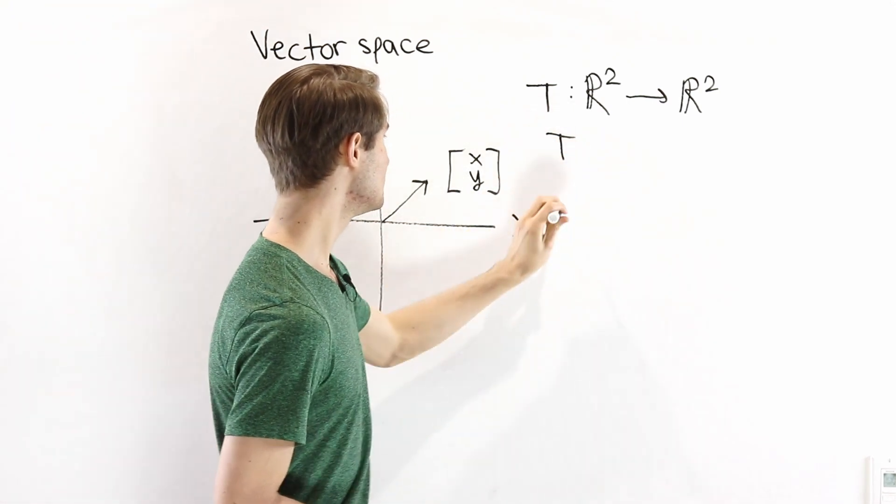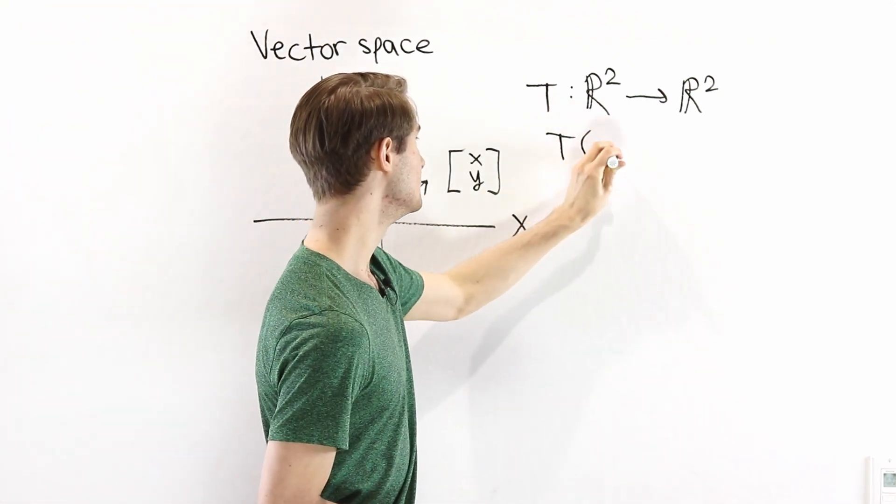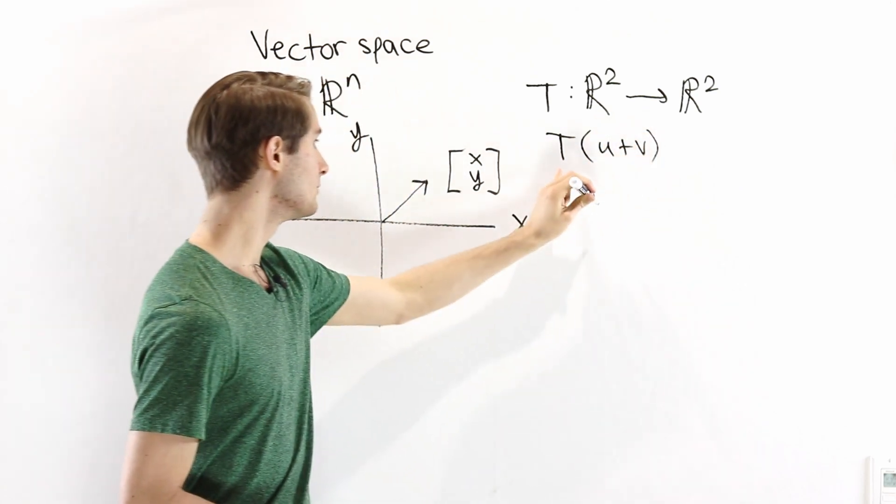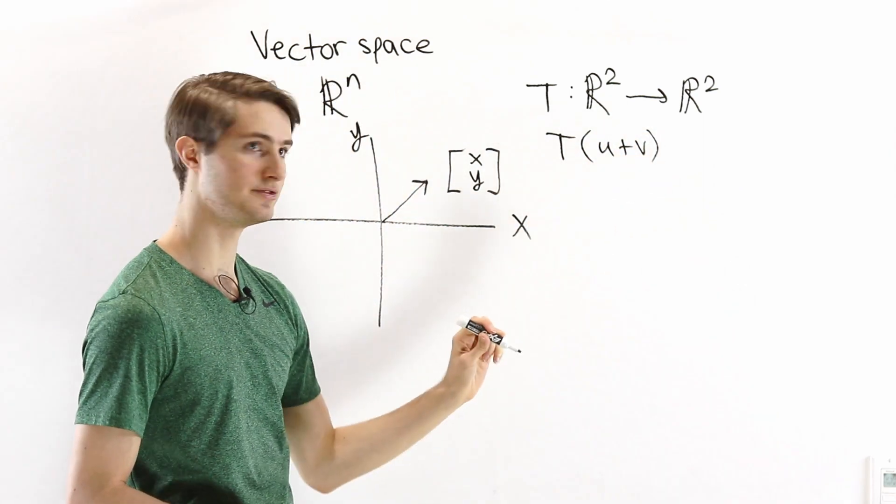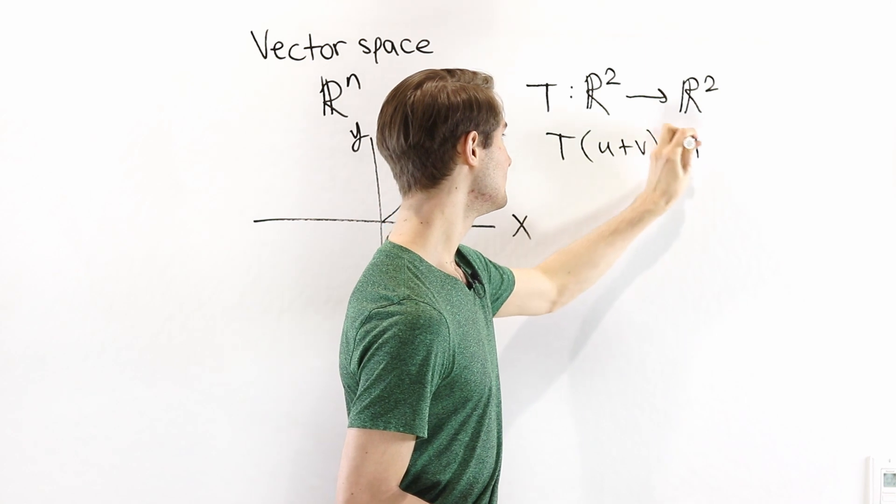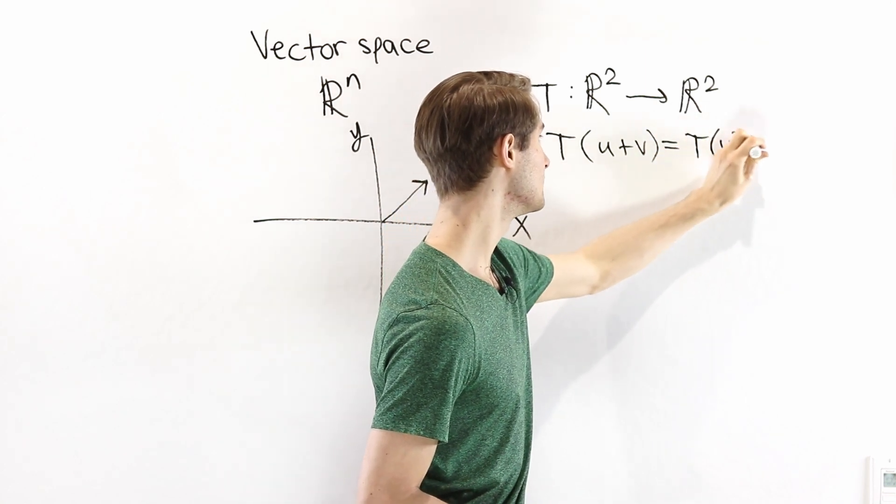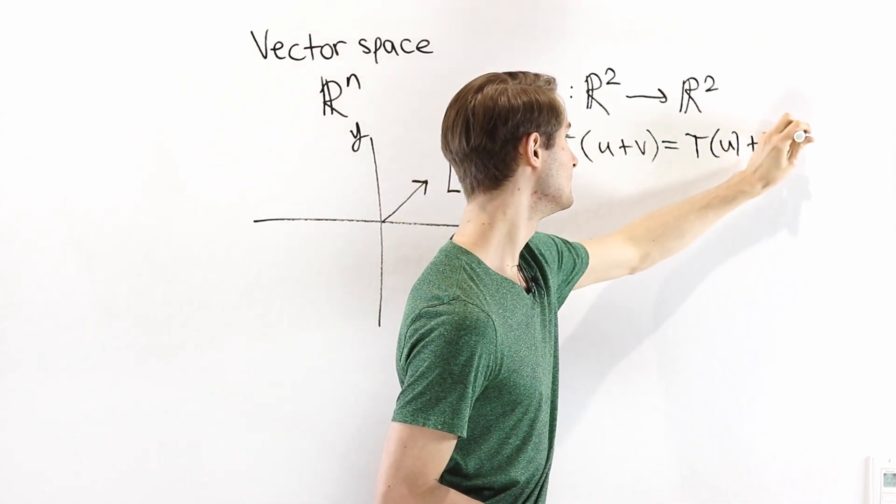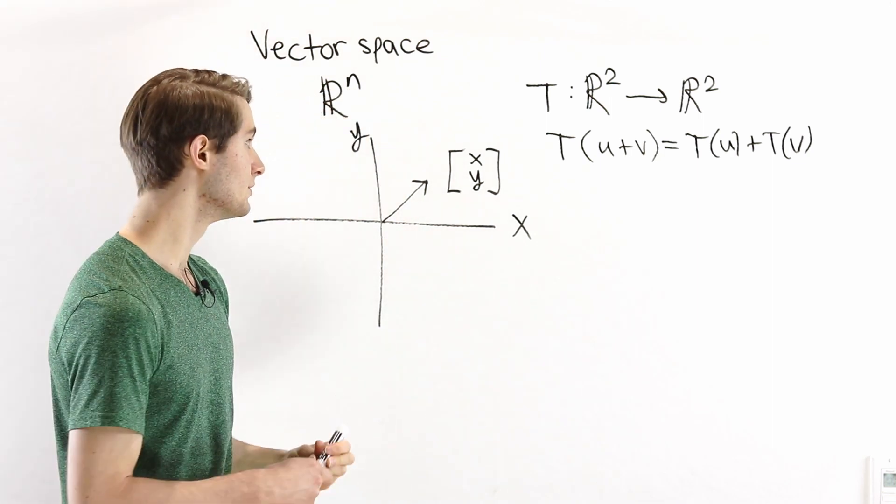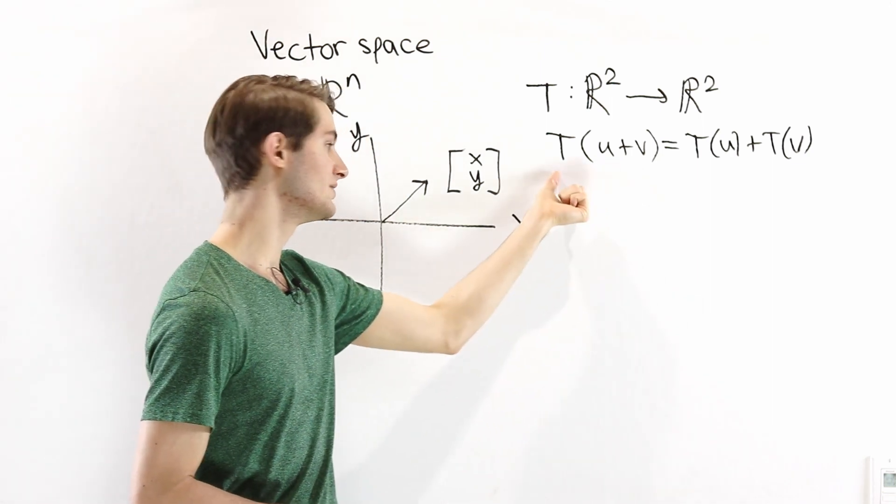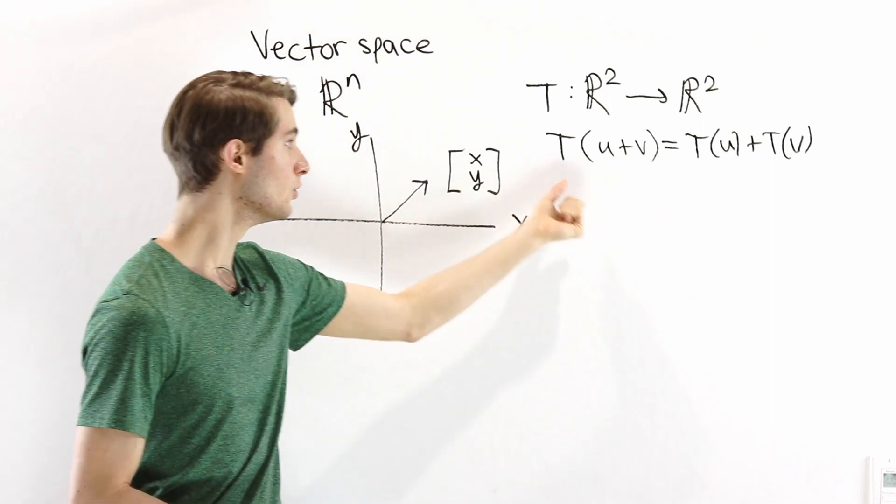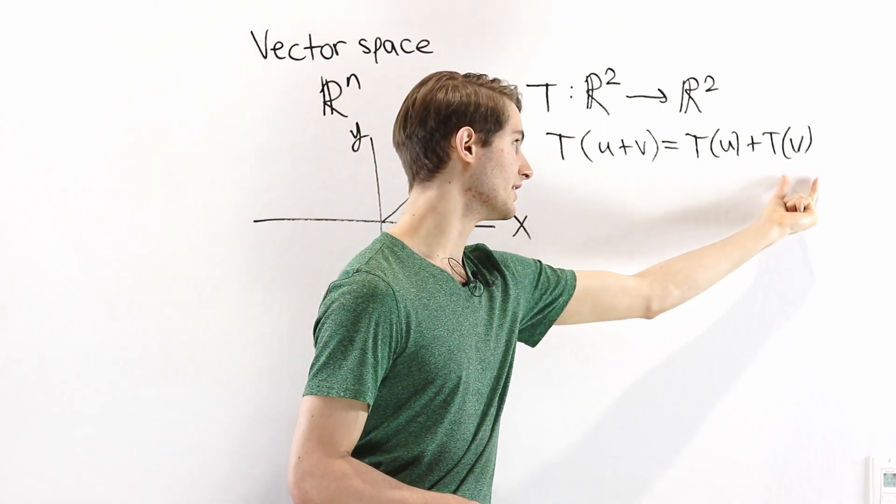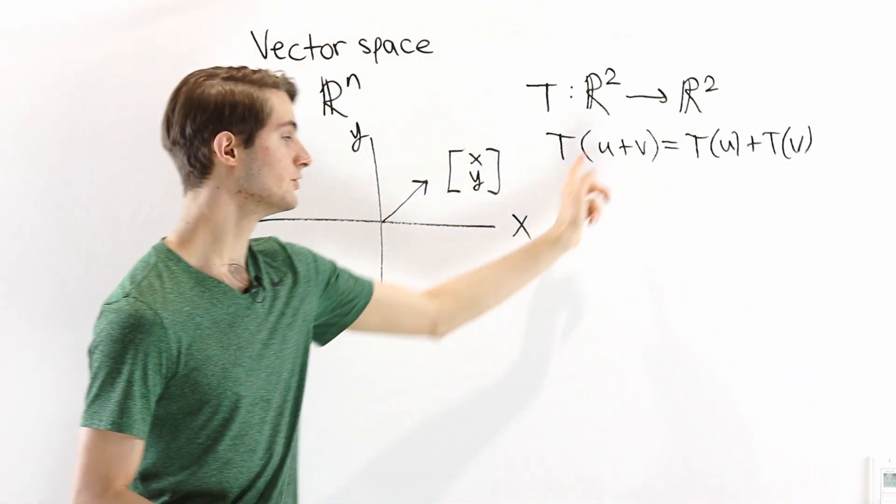A linear transformation is a function that takes in vectors and spits out vectors, but it has two specific extra conditions. The first condition is that if we take two vectors u and v, and we apply the function to u plus v, that should be the same thing as taking T of u plus T of v. So we can either add the vectors and then apply T, or we can apply T to each vector and then add the results.